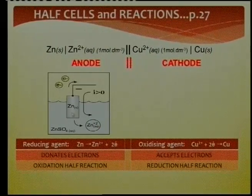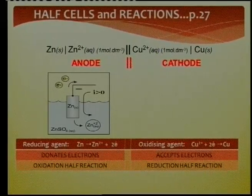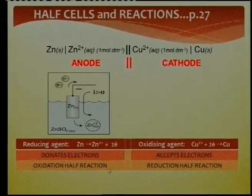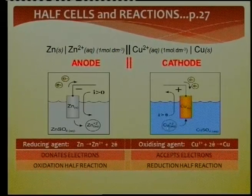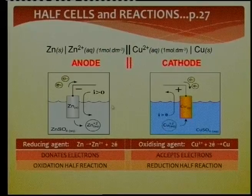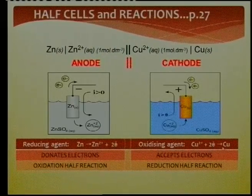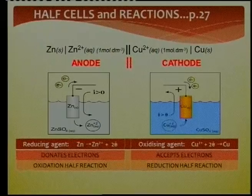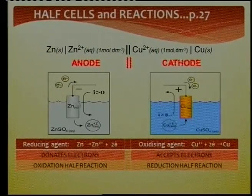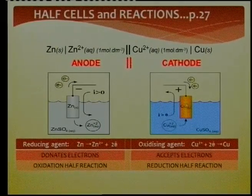Zinc metal donates electrons, so we call zinc the reducing agent — it allows the other species to get those two electrons. On the other side, copper ions accept the two electrons from zinc if they are connected by an external circuit and a salt bridge. The copper ions get the two electrons from zinc, and copper deposits onto the electrode. This electrode becomes heavier, while the zinc electrode becomes lighter in mass.